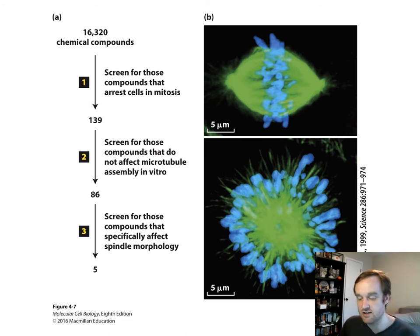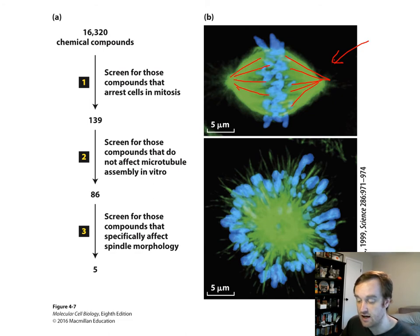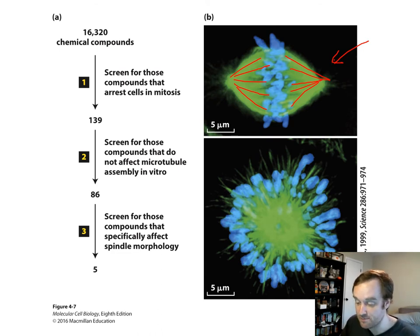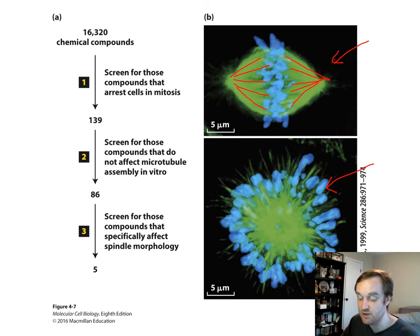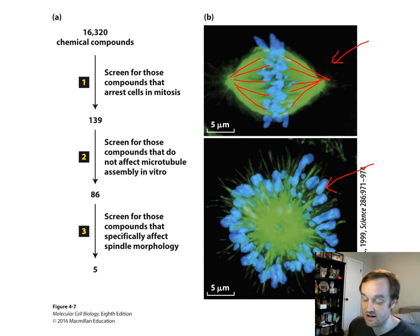In the microscope images, tubulin localization is shown in green and chromosomes in blue. In an untreated cell, spindle fibers attach on opposite sides and pull apart sister chromatids for mitotic division. With drug treatment, you see aberrant spindle fiber formation and abnormal chromosome segregation — indicating a potential drug that may eventually treat cancer.